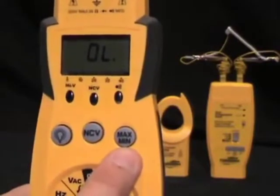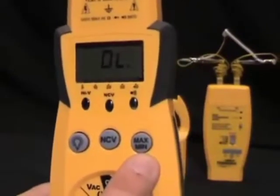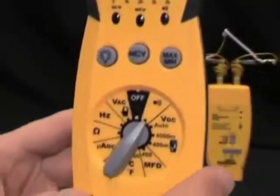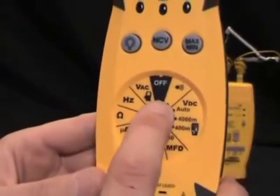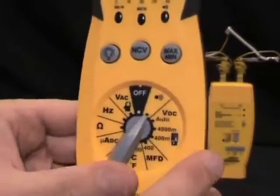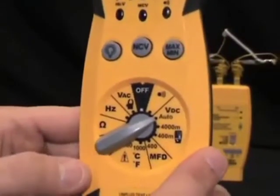Now going around the dial, we have continuity, so you can test continuity. We have volts DC. This is an auto-ranging meter so it will select the range for you and it is true RMS. We have microfarads for testing start-run capacitors.